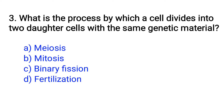Question number 3. What is the process by which a cell divides into two daughter cells with the same genetic material? Option A: Meiosis, B: Mitosis, C: Binary fission, D: Parthenogenesis. The right answer is Option B: Mitosis.